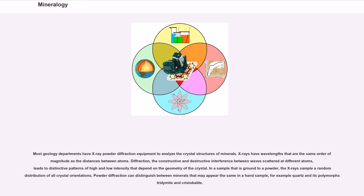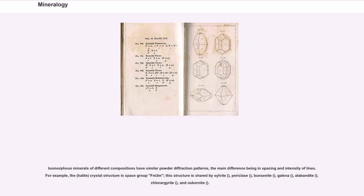Most geology departments have X-ray powder diffraction equipment to analyze the crystal structures of minerals. X-rays have wavelengths that are the same order of magnitude as the distances between atoms. Diffraction, the constructive and destructive interference between waves scattered at different atoms, leads to distinctive patterns of high and low intensity that depend on the geometry of the crystal. In a sample ground to a powder, the X-rays sample a random distribution of all crystal orientations. Powder diffraction can distinguish between minerals that may appear the same in a hand sample, for example quartz and its polymorphs tridymite and cristobalite. Isomorphous minerals of different compositions have similar powder diffraction patterns, the main difference being in spacing and intensity of lines.